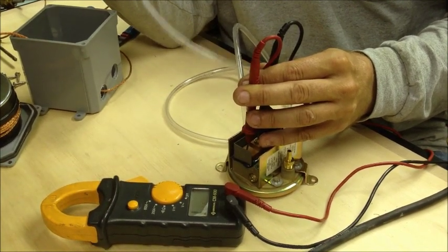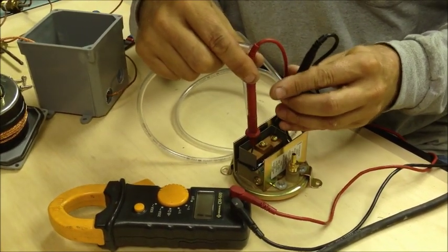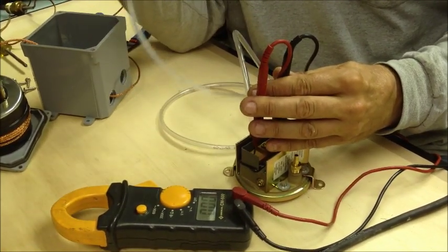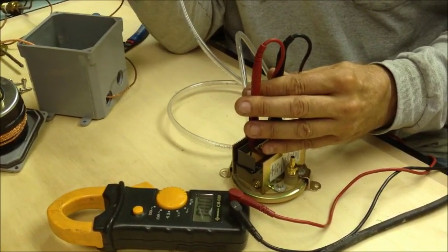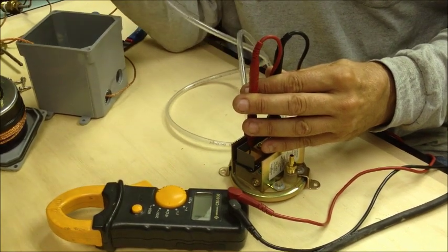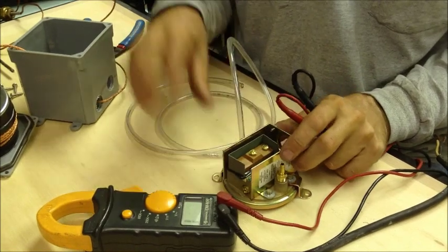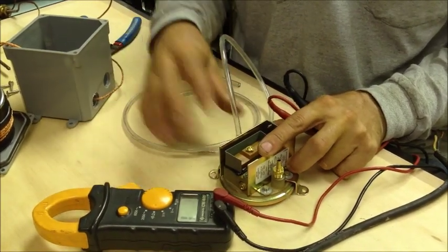When we release it, it should open. We can check also the normally closed where it will be buzzing, closed circuit. We put a vacuum on the low pressure port, it opens, we release, it closes. So we know that the low pressure side or the vacuum side of this switch is good.